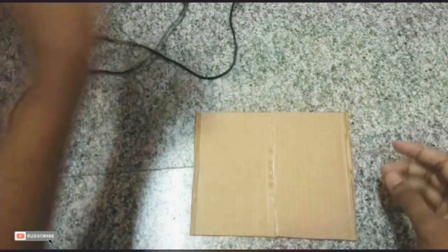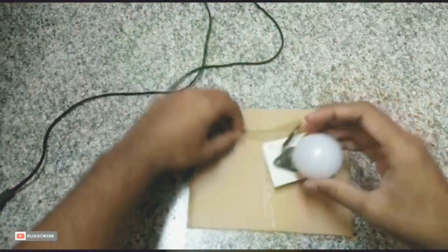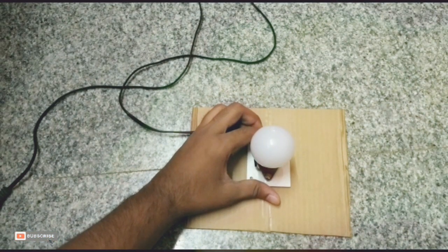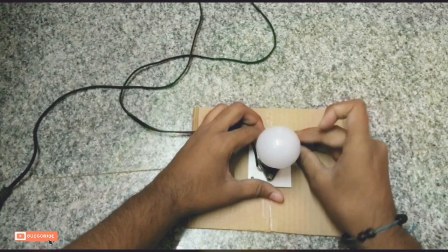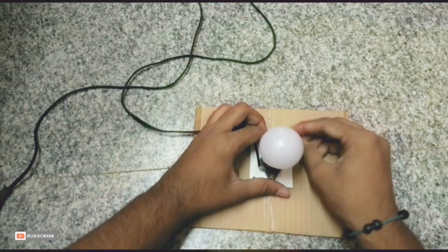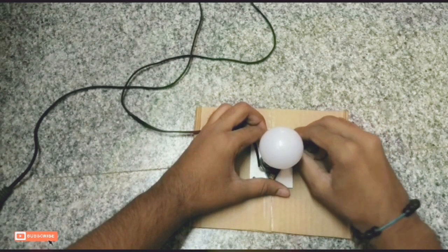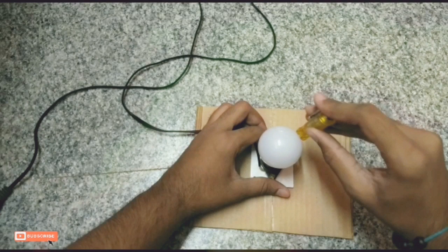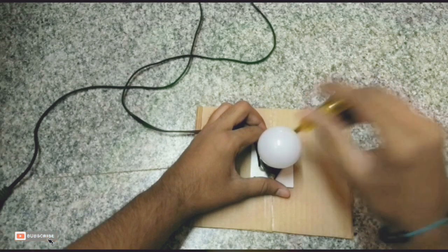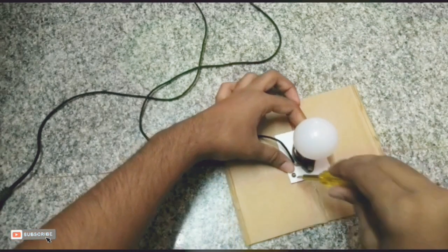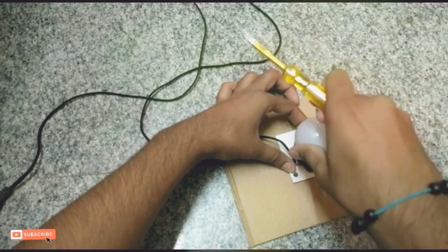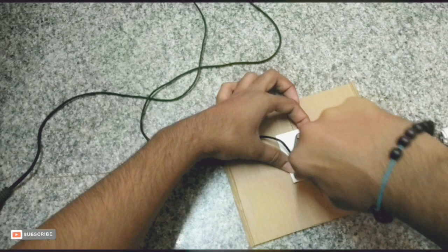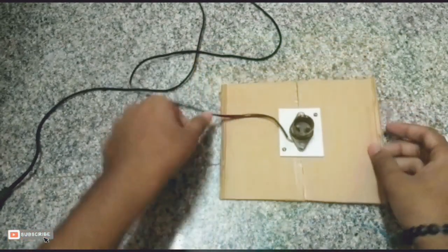Then take a cardboard sheet and fix the bulb holder on it. Fix the bulb holder with a screw with the help of a screwdriver. Fix the screw tightly so that it should not be shaken. Fix the two screws to make it strong. We have fixed it. It is not shaking.